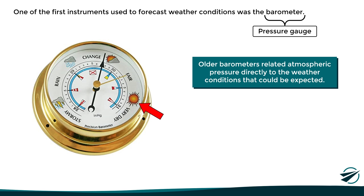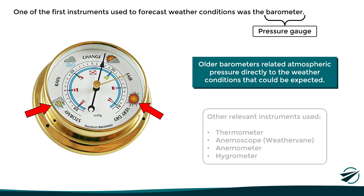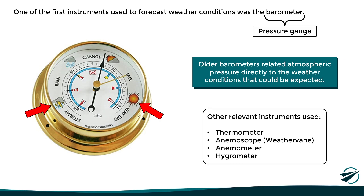The first barometers related atmospheric pressure directly to the weather conditions that could be expected, as we can see in this image. If there was high pressure, good dry weather could be expected. If there was low pressure, bad stormy weather could be expected. Other relevant instruments used were the thermometer, weather vane, anemometer, and the hydrometer.